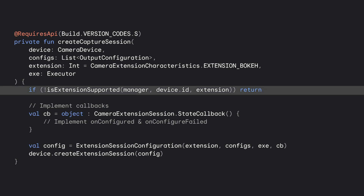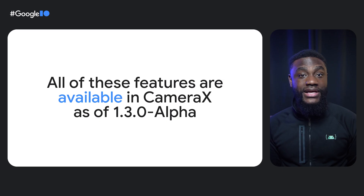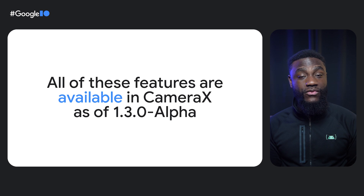Like everything else in camera, we must query to assure the camera is able to support extensions. We make a method like this to check if a specific extension is available based on the camera ID. Let's see an example of creating a session with the bokeh extension. We would first check if the extension is supported. Then we implement our CameraExtensionSession.StateCallback with onConfigured and onConfiguredFailed functions. Instead of creating a normal session configuration object, we create an ExtensionSessionConfiguration. From there, we call device.createExtensionSession. I'm also pleased to announce that all of these features that improve image quality are available in CameraX as of 1.3.0 alpha.